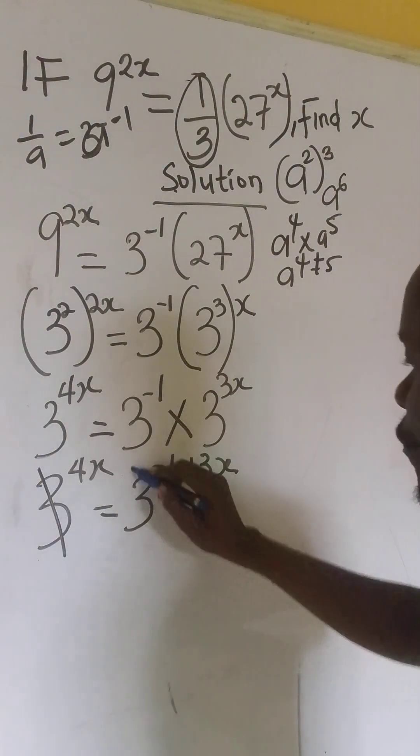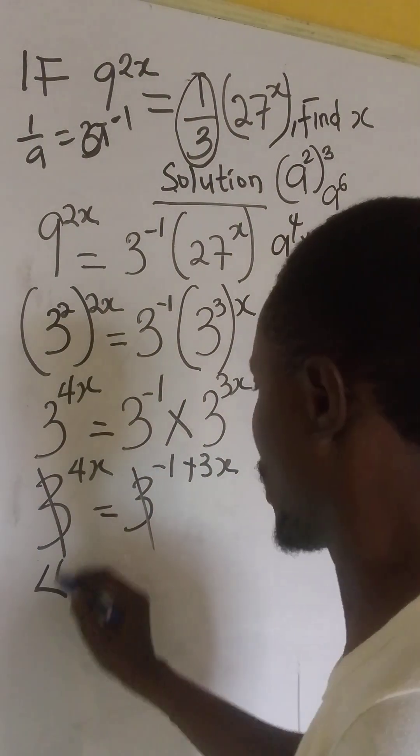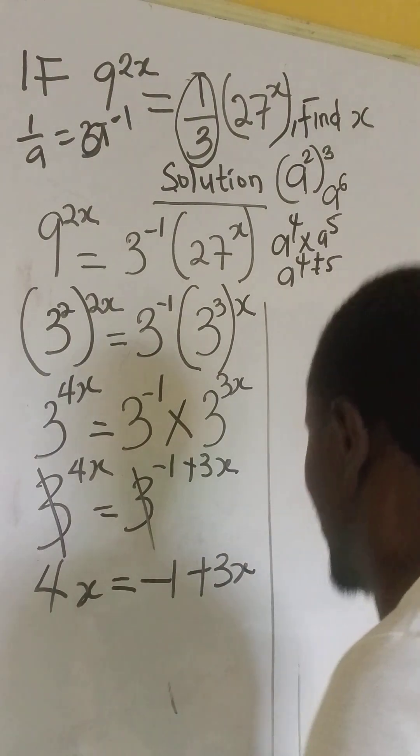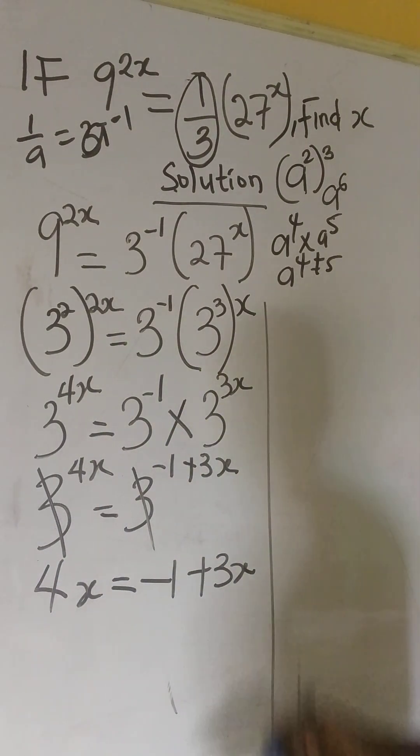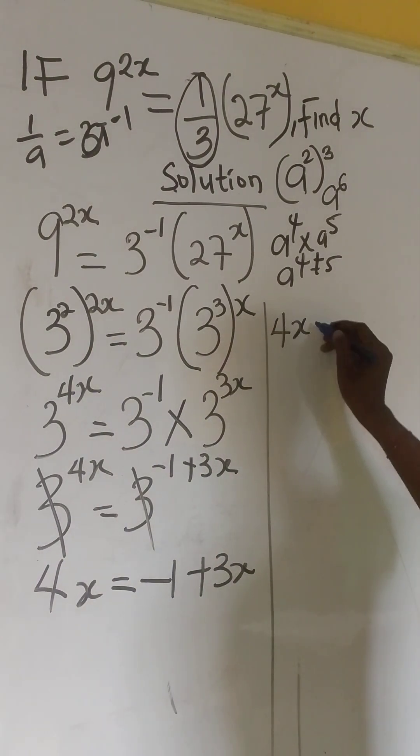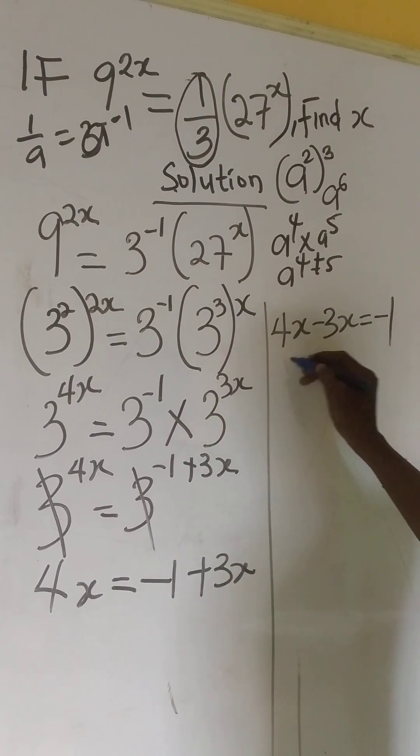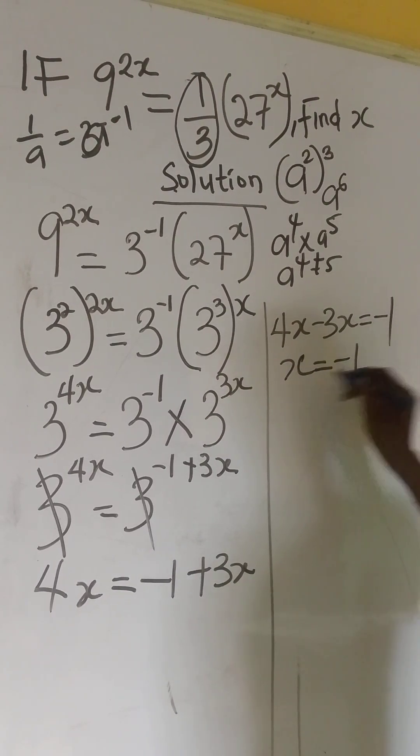So, here, 3 cancel 3. We now have 4x equals to minus 1 plus 3x. So, from here, we can collect like terms. We now have 4x minus 3x equals to minus 1. 4x minus 3x will give us x equals minus 1.